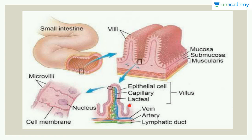Taking a deeper look at a villus, you can see the epithelial cells lining the outermost region, the capillaries, and the lacteals. Moving deeper, you can see the veins, arteries, and lymphatic duct. Inside an epithelial cell, there is one nucleus, a cell membrane, and microvilli on top of it. Knowing this structure is important because these cells are involved in the absorption process.